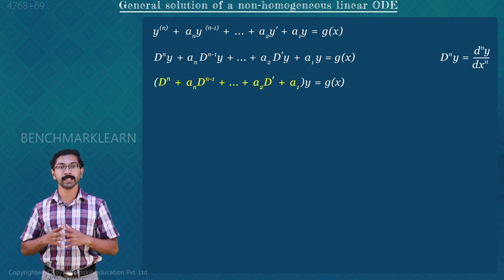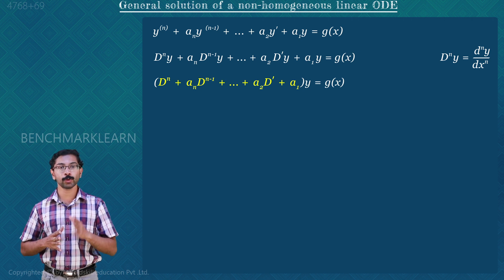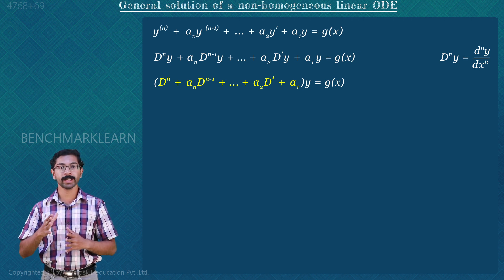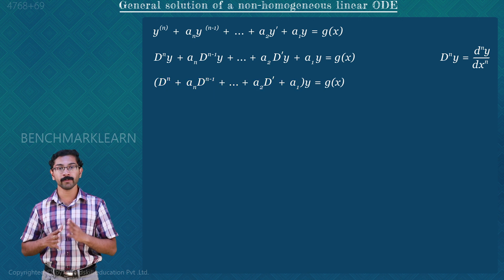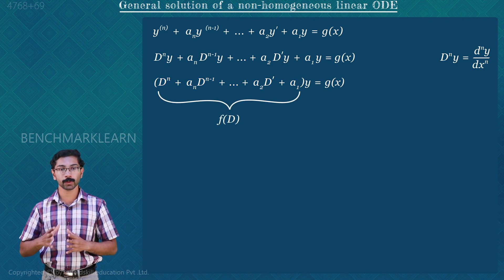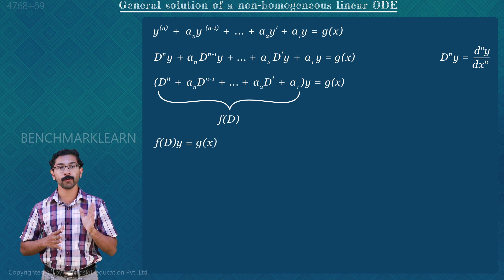For easy notation, we can replace D^n + a_n · D^(n−1) + ... + a2 · D^1 + a1 with f(D). So the differential equation becomes f(D) · y = g(x).